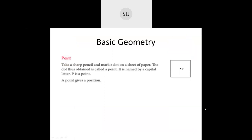We started with the basics of geometry — a point. A point gives a position. When you take a sharp pencil and make a dot on a sheet of paper, that dot is called a point. You name it with a capital letter, such as point P.